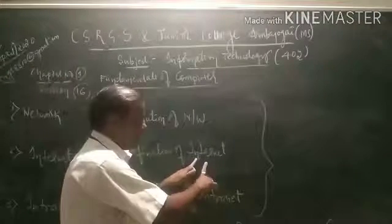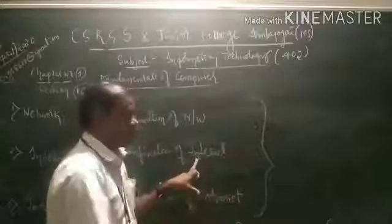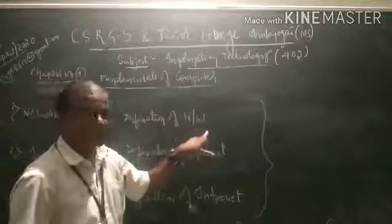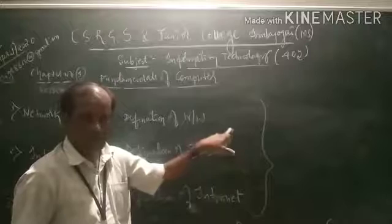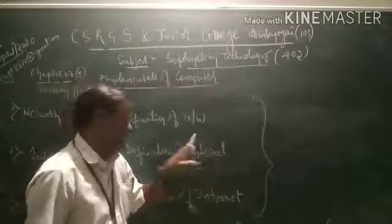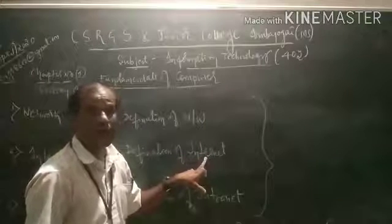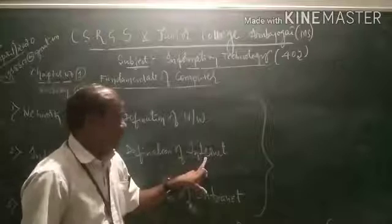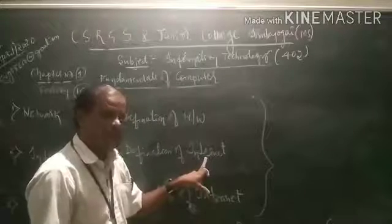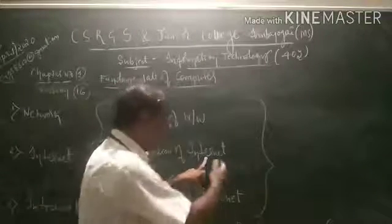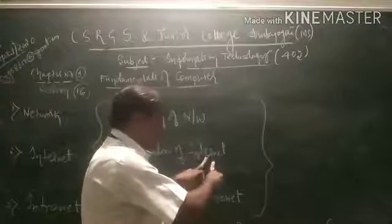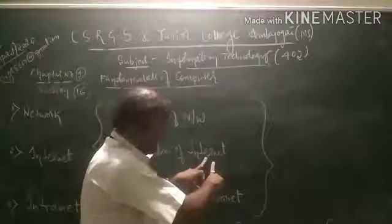Mathematically, internet equals LAN plus MAN plus WAN. So all LANs, MANs, and WANs together form the internet — one big network. Internet is used to share data from anywhere to anywhere; for example, from Ambajogai to America. That is why it is called the internet.